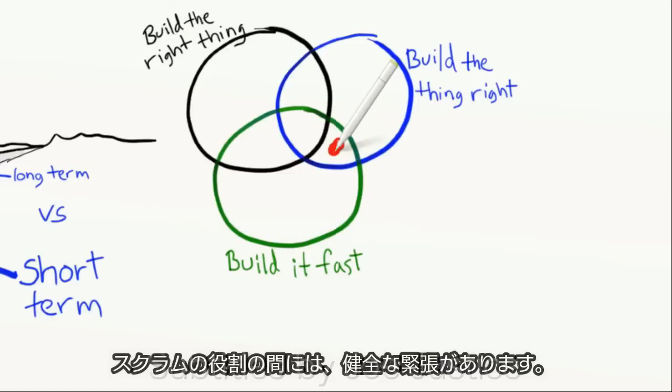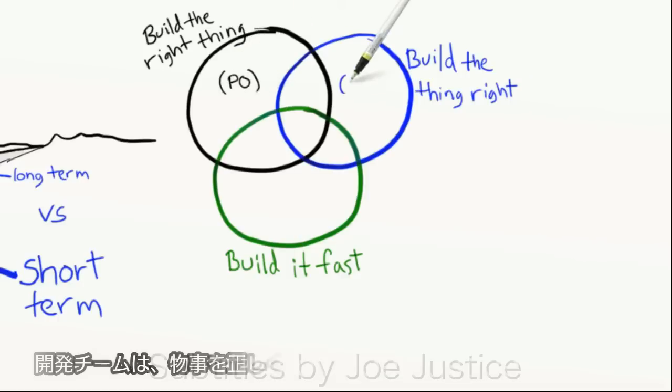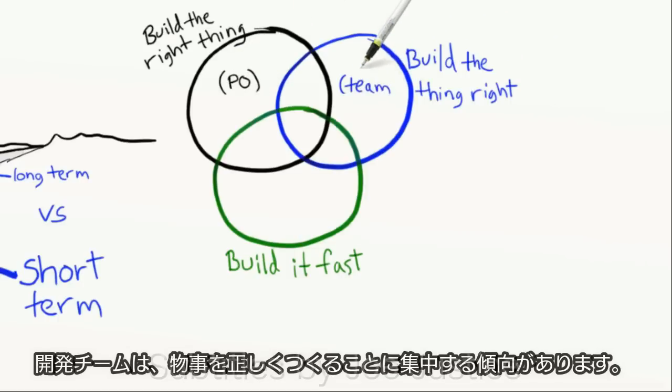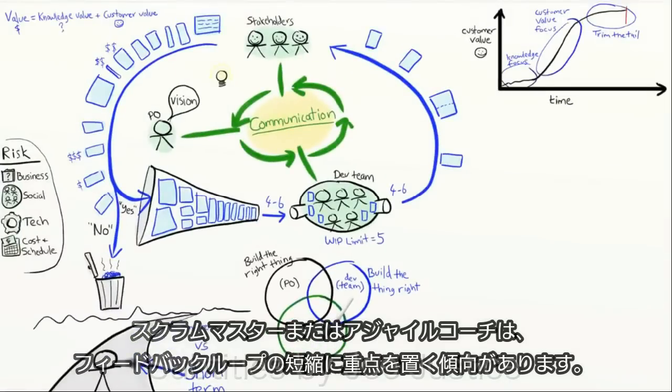So there's a healthy tension here between the scrum roles. Product owners tend to focus on building the right thing. Development teams tend to focus on building the thing right. And scrum masters or agile coaches tend to focus on shortening the feedback loop.